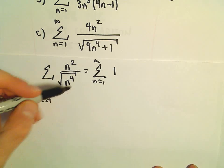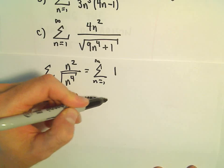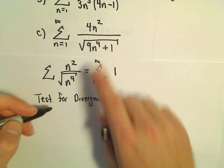So recall the test for divergence. The test for divergence says if the limit is not 0, the series automatically diverges.